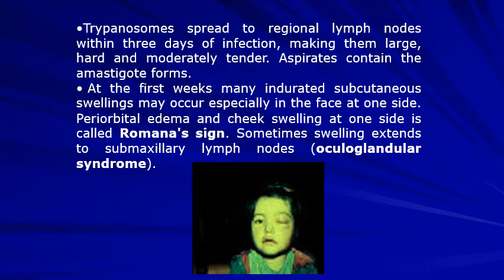In the first weeks, many indurated subcutaneous swellings may occur, especially on one side of the face. Periorbital edema and cheek swelling on one side is called Romana's sign. Sometimes the swelling extends to the submaxillary lymph nodes, which is called oculoglandular syndrome.